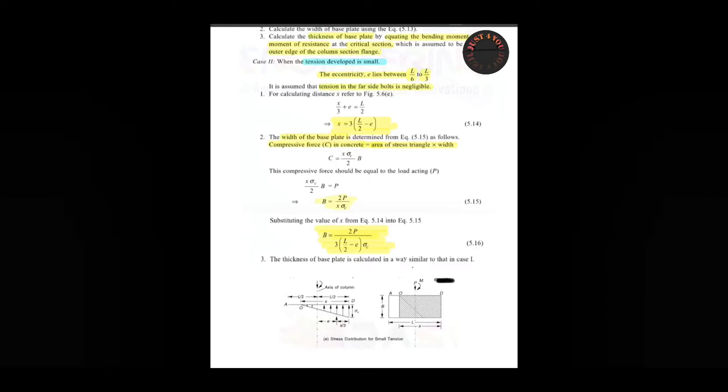The next step is to calculate the width of the base plate, which can be calculated by multiplying the area of the stress triangle with width. The perpendicular and base values are x and σc respectively. The area is half base times perpendicular times width b, and the compressive force should equal the loading P.